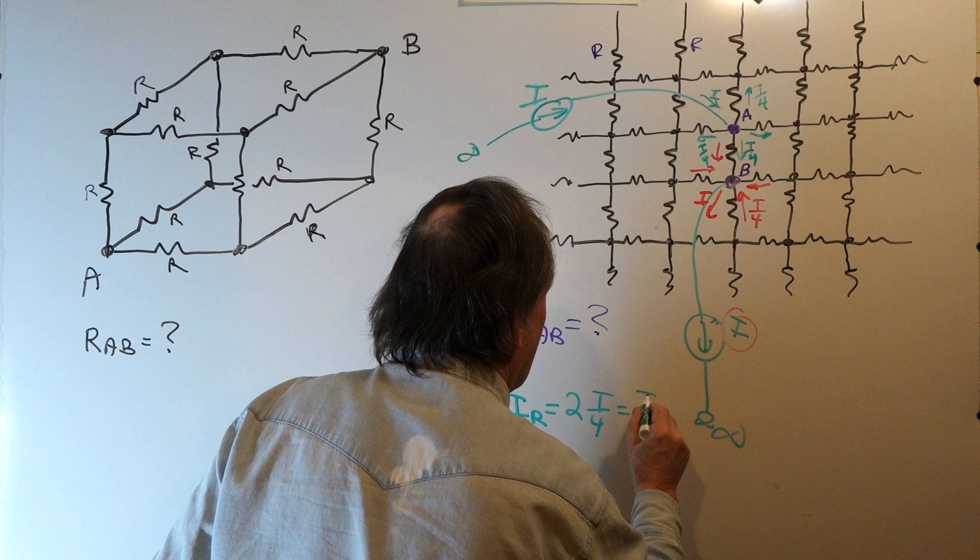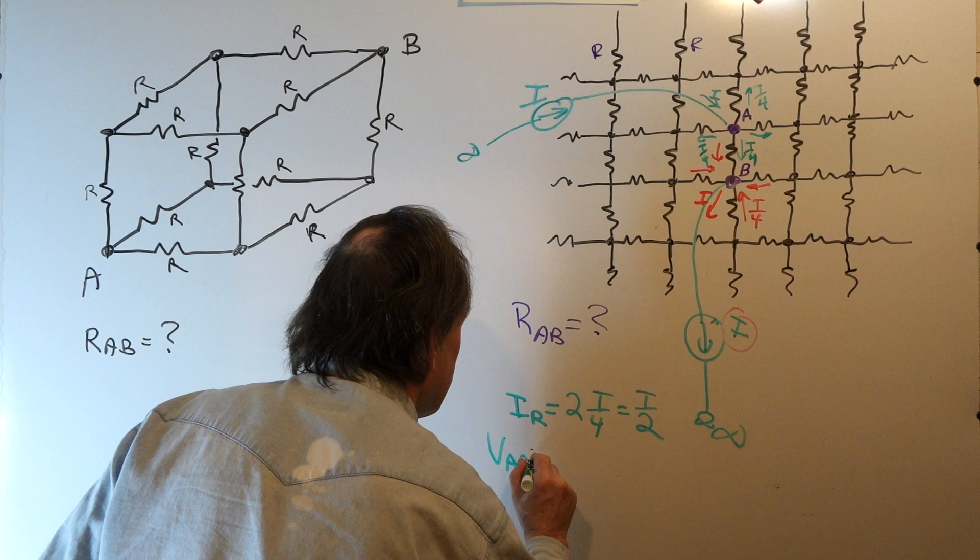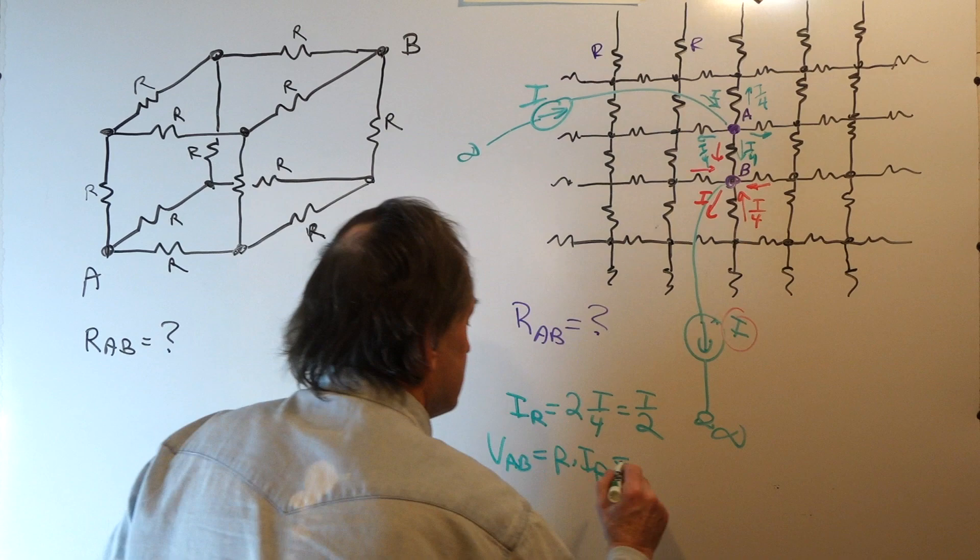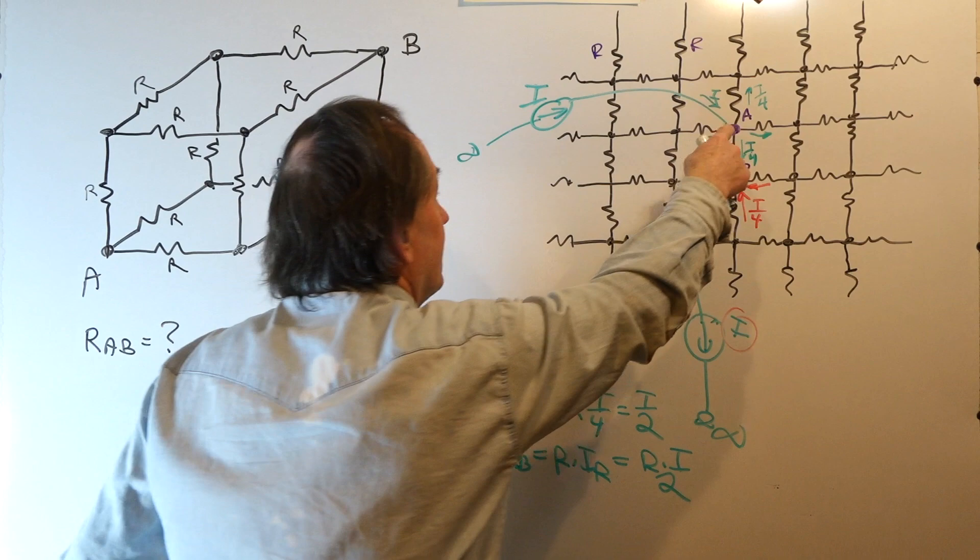Well, what's the voltage between A and B? VAB is just R times the current in the resistor, which is R times I over two. That's the voltage from A to B.